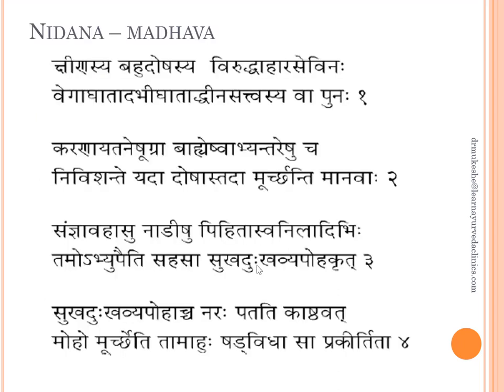In Madhavadana, a separate Nidana has been explained for Moorcha: Kshinasya, Bahudoshasya, Viruddhaharasevinaha, Vegarodha, Abhighata, Hinasattvasya Vapunaha. So either the Prakriti is Kshina, there is Bahudosha Lakshana, or any Vyadhi that happens due to Bahudosha. That is why if you go through most diseases when we end up at the Asadha Lakshana, Moorcha is explained as an important feature — even in diseases like Shvasa, Hikka, etc., Moorcha is told as one of the important complications.